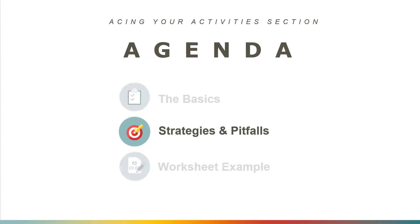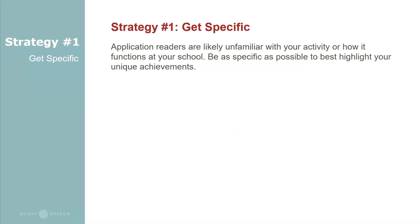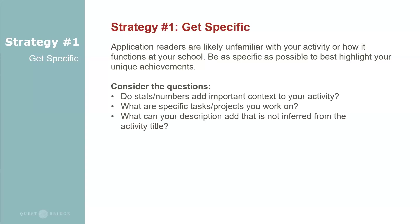Now let's cover some strategies and common pitfalls. Our first strategy: get specific. Think about what makes your activity or your involvement in it unique. Application readers might not be familiar with an activity, or if they're familiar with the general concept — for example, National Honor Society or working at a fast food restaurant — they're not familiar with how it operates at your school or in the specific role that you play. Consider these questions: do stats and numbers add important context? What are the specific tasks and projects that you work on? What can your description add that is not inferred from the activity title?